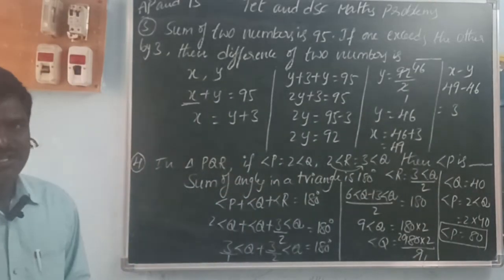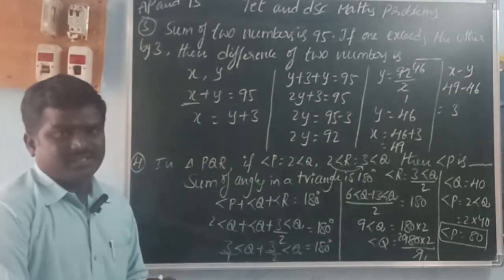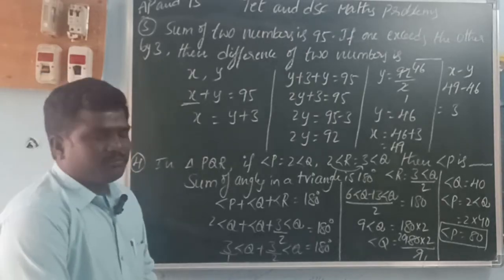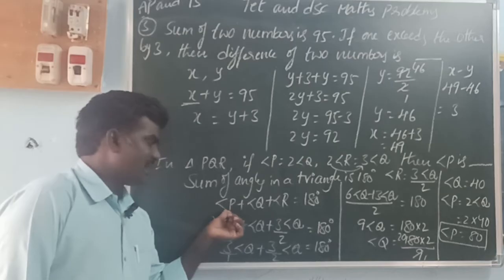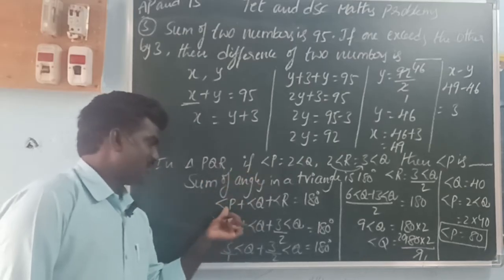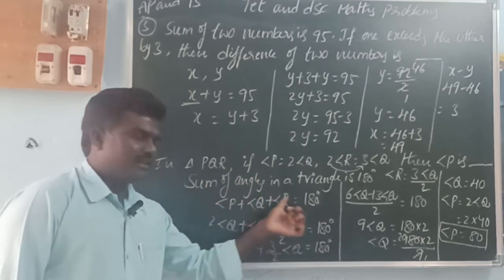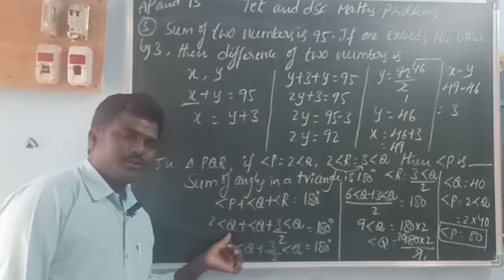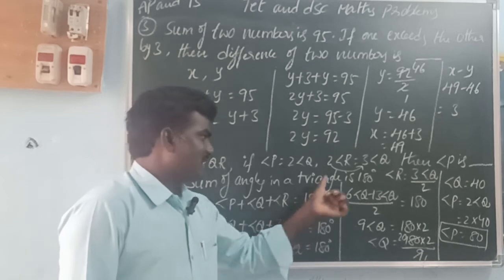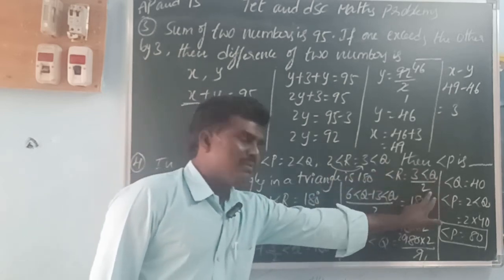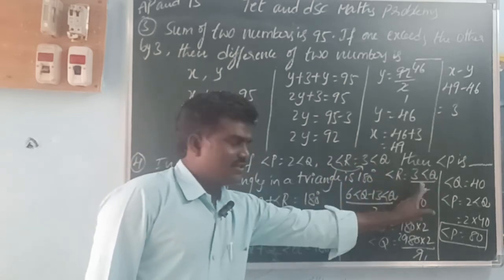Using this property in triangle PQR, the sum of three angles P, Q, R equals 180. P is 2 times Q, and angle R is 3 times Q divided by 2.